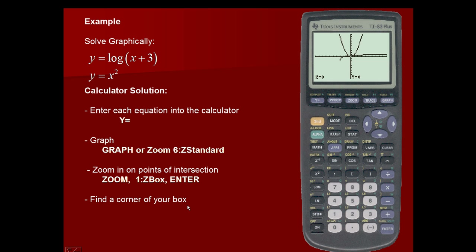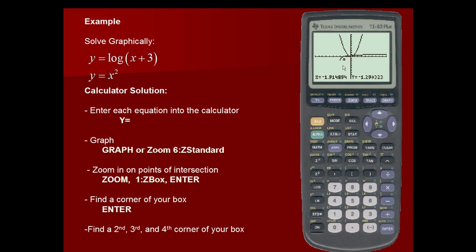Next, we're going to find a corner of our box. The cursor should be blinking at the origin with my crosshairs. To find the first corner of my box, I'm simply going to go down and to the left, and press enter. Now I'm going to find a second, third, and fourth corner of my box by going up and to the right to zoom in on this box, and press enter.